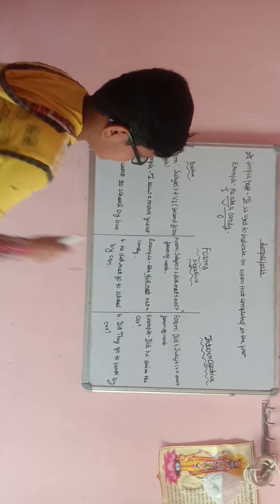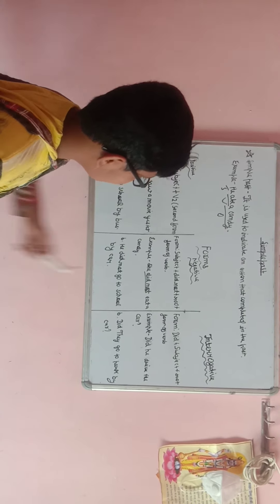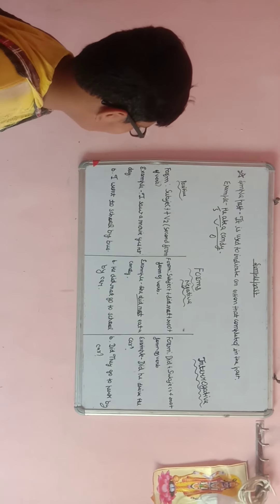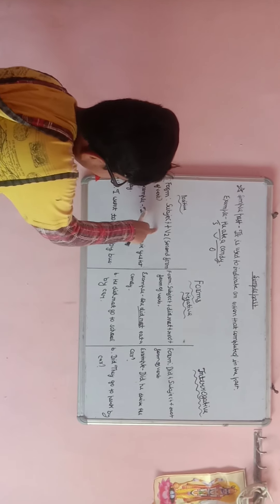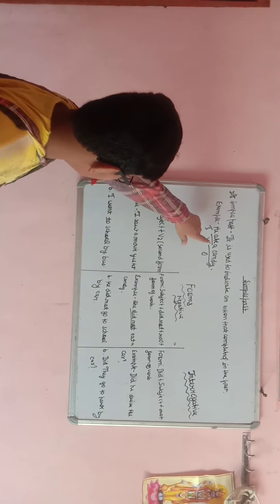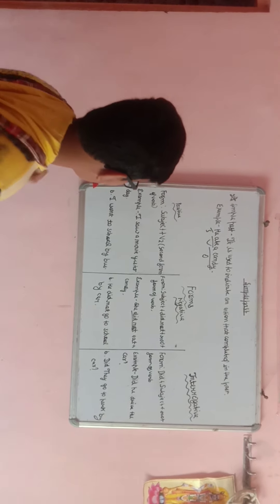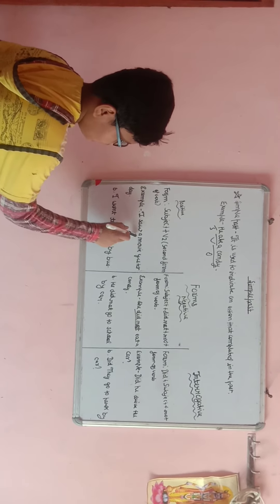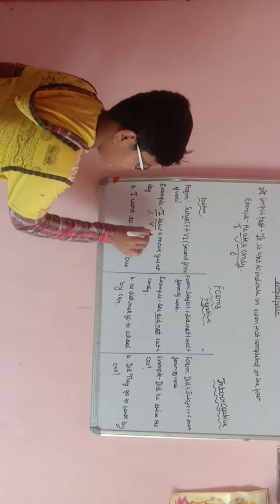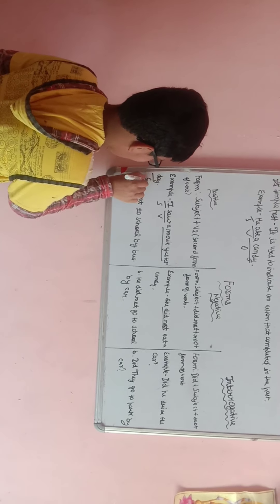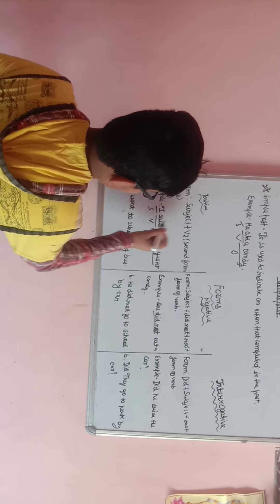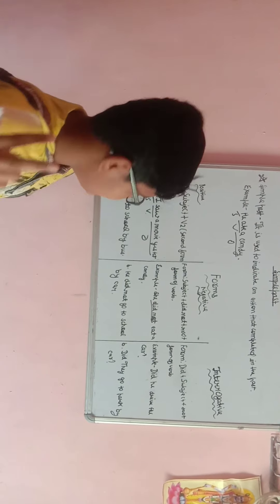So we discuss the forms of simple past tense. First, the positive form. In positive form: subject plus verb second form. For example, 'I saw a movie yesterday.' Here 'I' is the subject, 'saw' is the verb — we put the second form of the verb — and 'a movie yesterday' is the object.